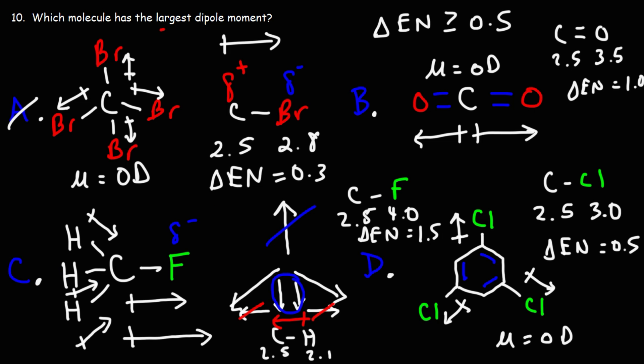These dipole moments do not cancel, so this molecule has a dipole moment above zero. That means it has the largest dipole moment of all the answer choices. The fact that it has a net dipole moment also tells us that this molecule is a polar molecule.